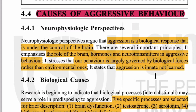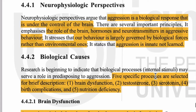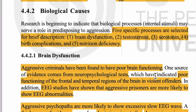Neurotransmitter वो chemical है जिससे दो neurons — nervous system के single units — एक दूसरे से connect होते हैं। तो hormones, brain, और neurotransmitters aggressive behavior के लिए जिम्मेदार माने गए हैं। Behavior को biological forces के अलावा environment भी control करता है। ऐसा कहा जाता है कि aggression innate है — मतलब जन्म से हमारे अंदर aggression है, यह कोई सीखने वाली चीज़ नहीं है।